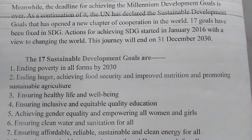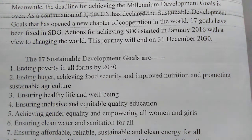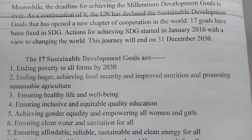Meanwhile, the deadline for achieving the Millennium Development Goals is over. As a continuation of MDG, the UN has declared Sustainable Development Goals, which has opened a new chapter of cooperation in the world. There are 17 specific goals of SDG. Goal one: ending poverty from all countries in all forms by 2030 — we should remove poverty from all the countries of the world by 2030.